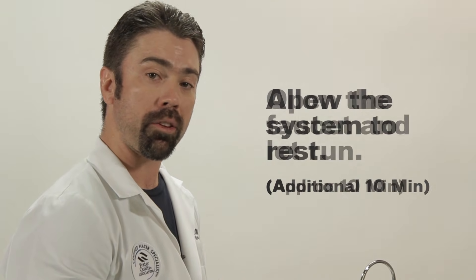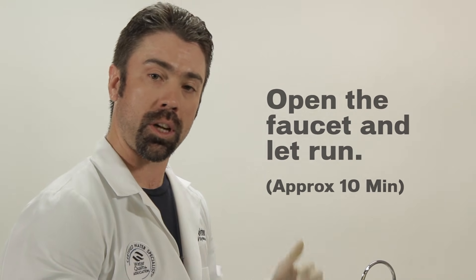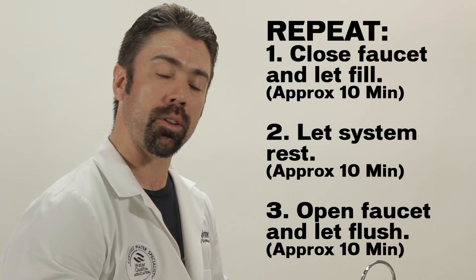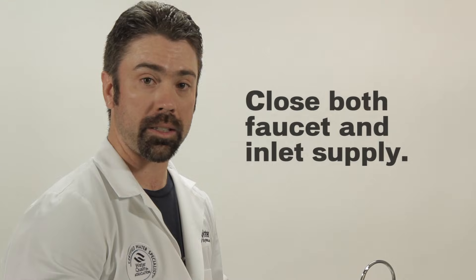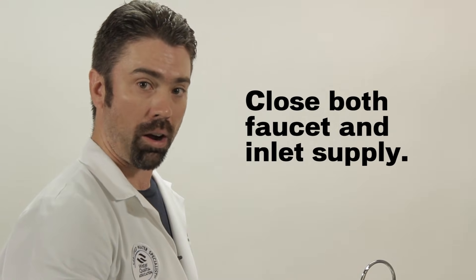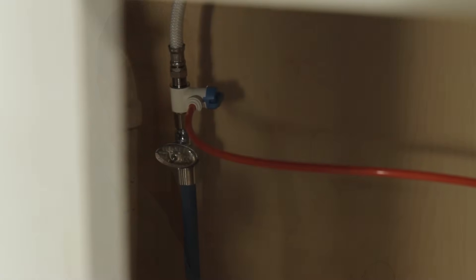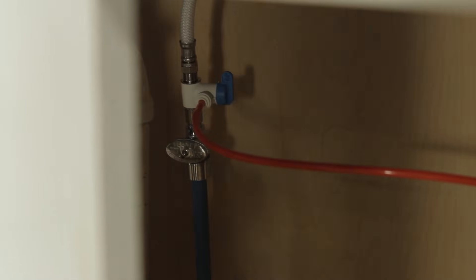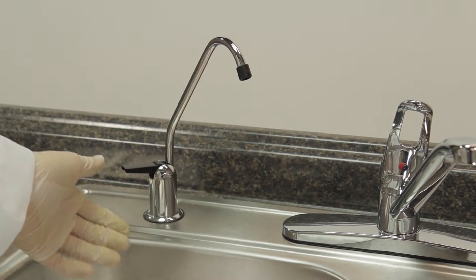Then you'll open the faucet and let it run for 10 minutes. Then you'll repeat this process, you'll shut the faucet off, let it rest for 10 minutes, and then turn the faucet back on and let it flush for 10 minutes. After you've completed this, you'll turn the faucet off and then you'll actually turn the inlet off as well. So we've finished the sanitation process and we're going to shut the inlet off. Next, we would open the faucet and allow the tank to completely drain.